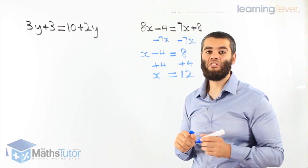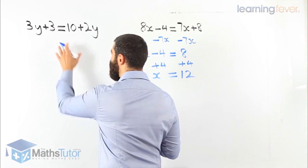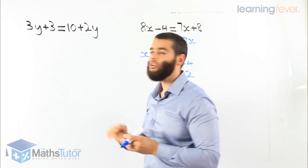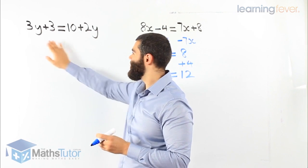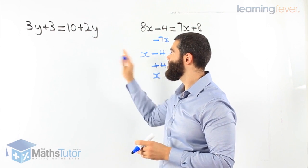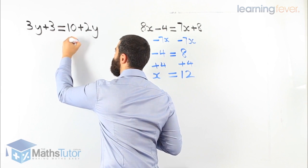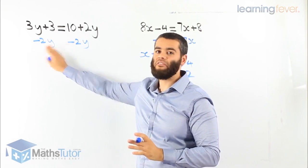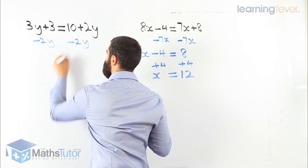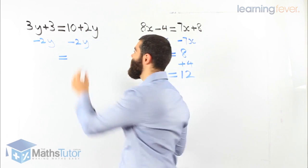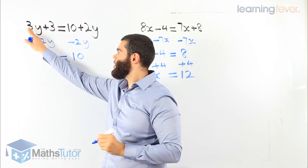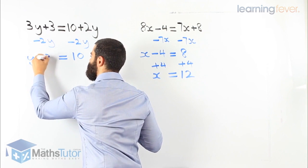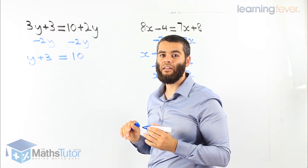3y plus 3 equals 10 plus 2y. Again, you notice we have pronumerals on both sides — 3y here and 2y there. We would like to keep our pronumerals on the left-hand side. So we take away 2y from both sides. What we do to one side, we must do to the other. 2y take away 2y is gone, we're left with 10. 3y take away 2y is 1y, so y plus 3 equals 10.